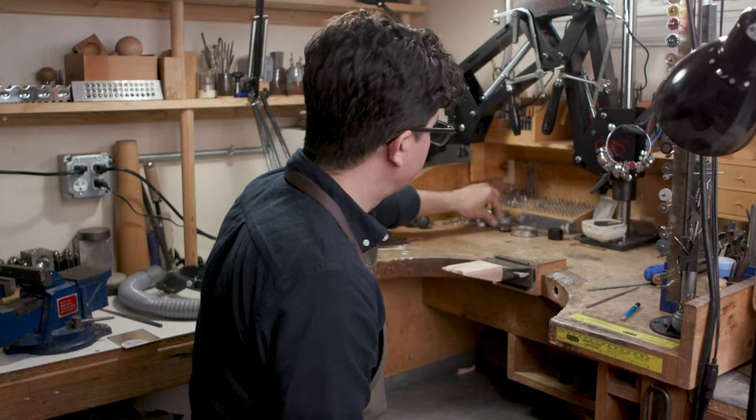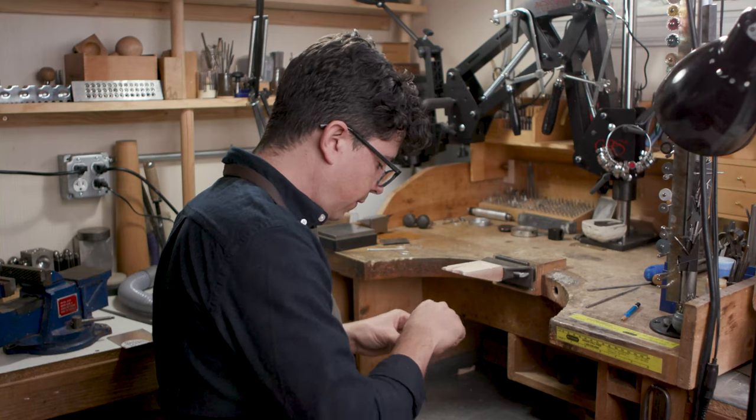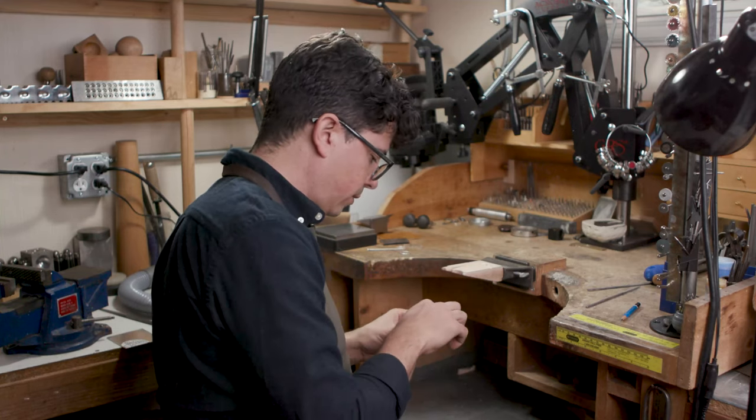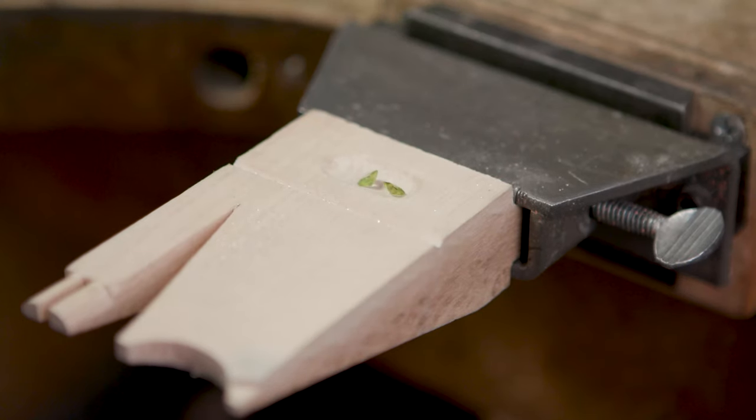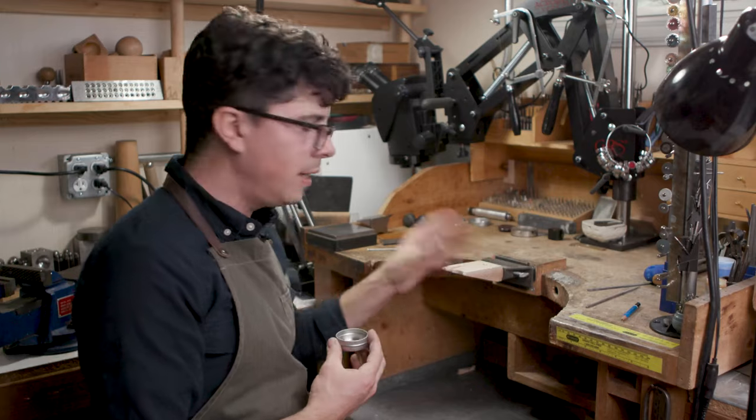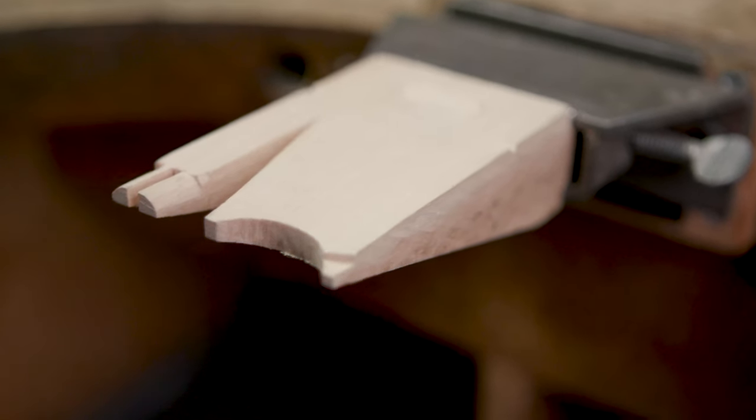And then we've got this little dish here, which is great for holding small elements or stones. It's especially useful when you're setting a lot of little stones and you want to keep them handy to grab quickly. So that's how I customize my bench pin and how I use the different parts of it.